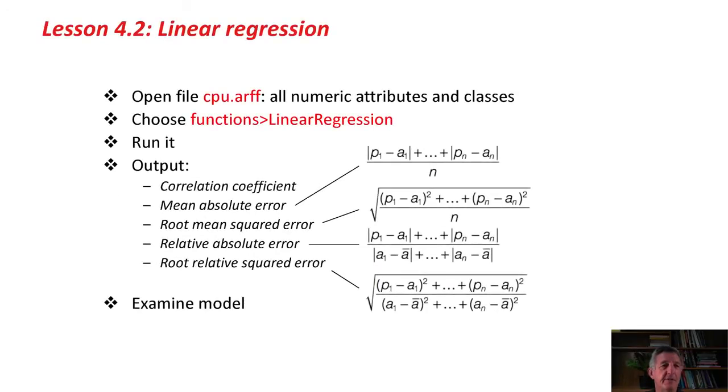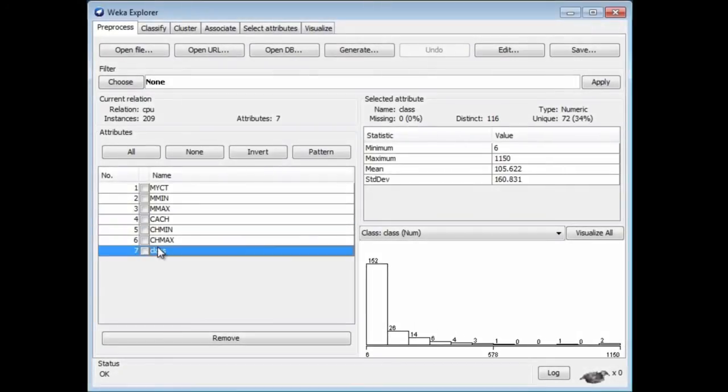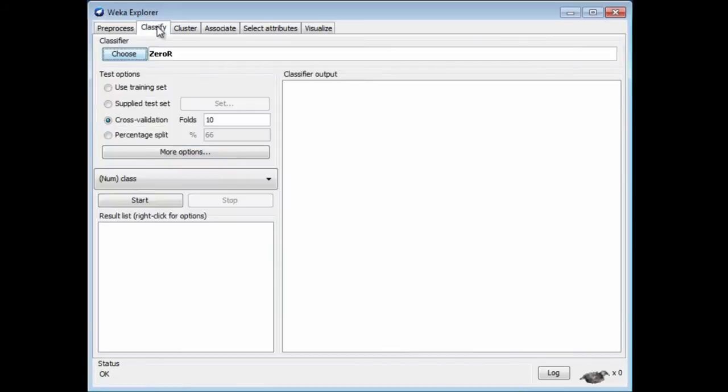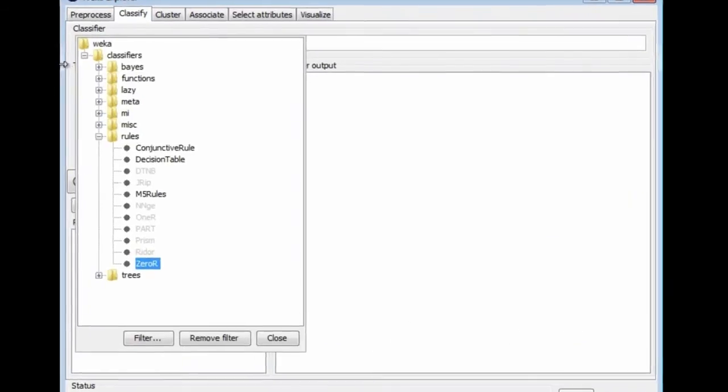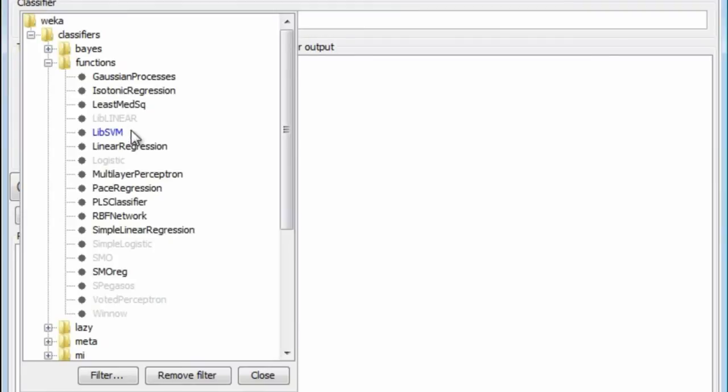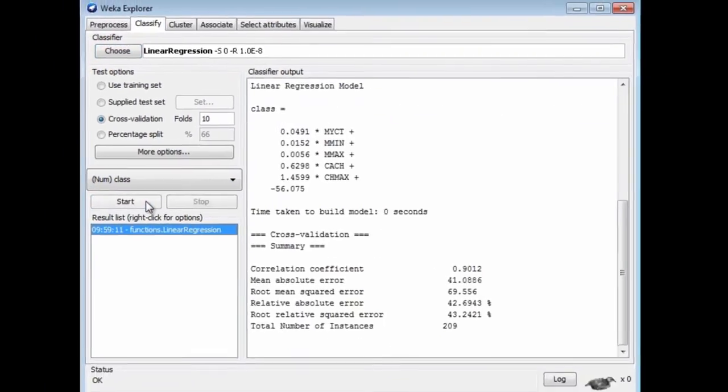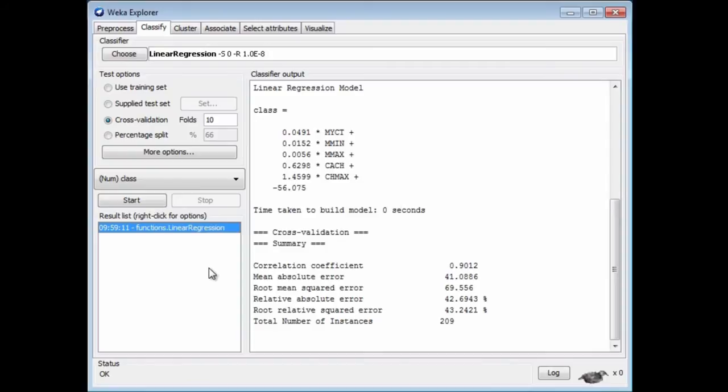Let's do it, then. We're going to open a regression data set, cpu.arf. This is a regular kind of data set. It's got numeric attributes. The most important thing here is it's got a numeric class. We're trying to predict a numeric value. We can just go and run linear regression. It's in the functions category: Functions, Linear Regression. We just run it.